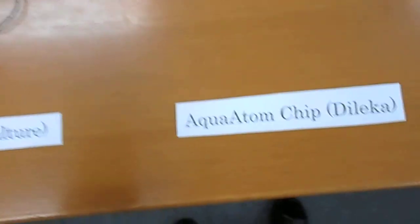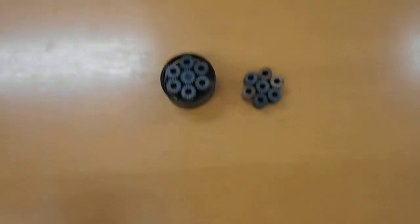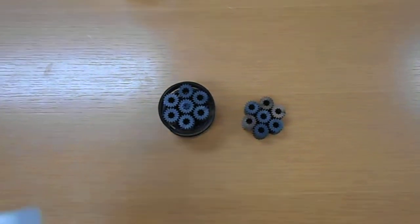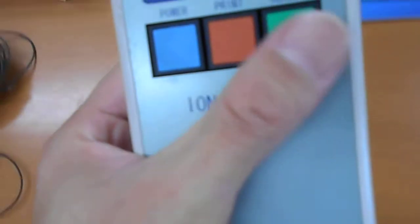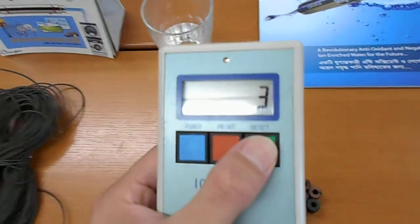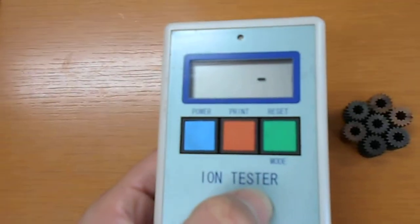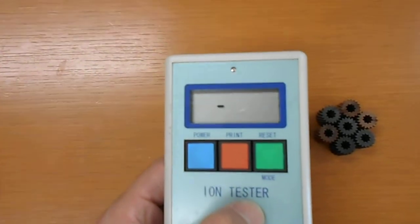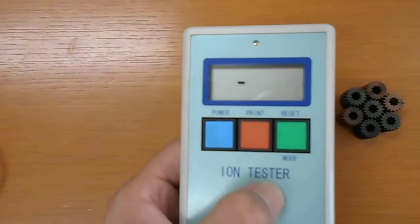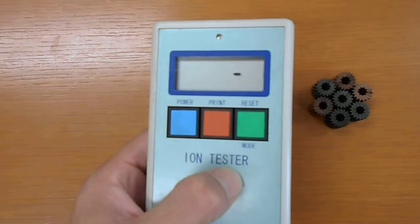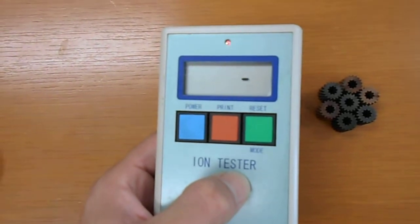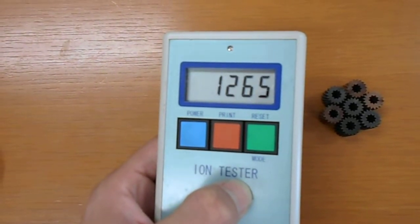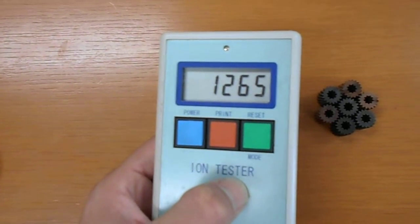Next, this is the aqua atom chips inside dedica. So we press reset and put it on. One thousand two hundred sixty five.